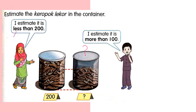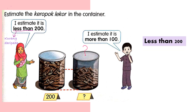Look at this girl. This girl says: 'I estimate it is less than 200.' Dia kata less than 200. Less than maksudnya kurang daripada — kurang daripada 200. Is it correct? Reasonable or not? Jangkaan dia munasabah tak? Boleh terima tak? Kurang daripada 200 — penuh 200, separuh, mestilah kurang kan? So it's correct — less than 200. Boleh terima.